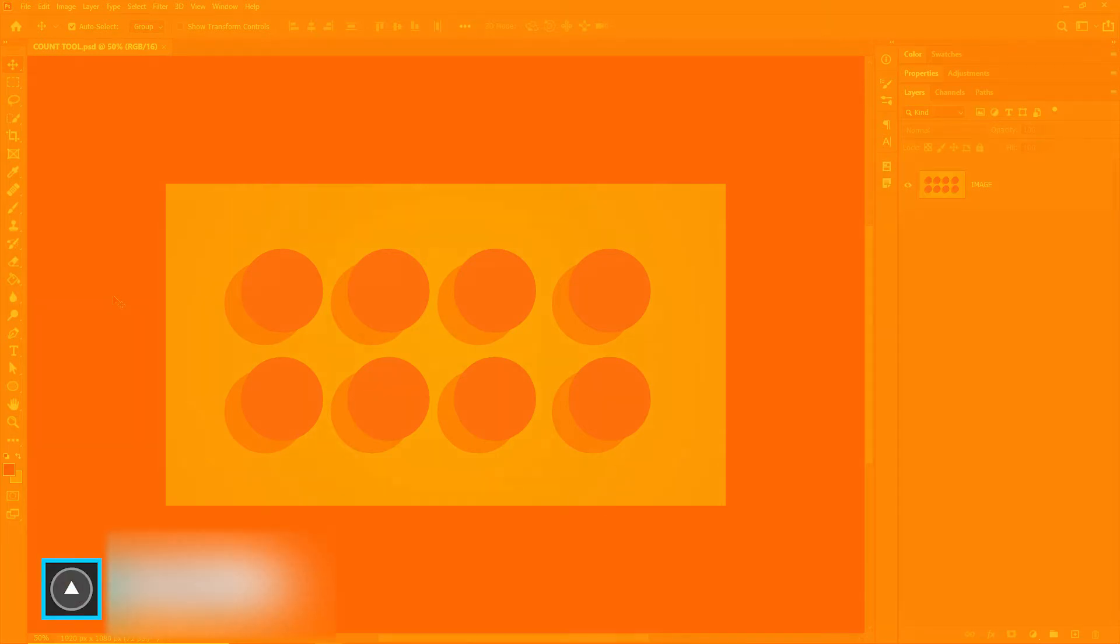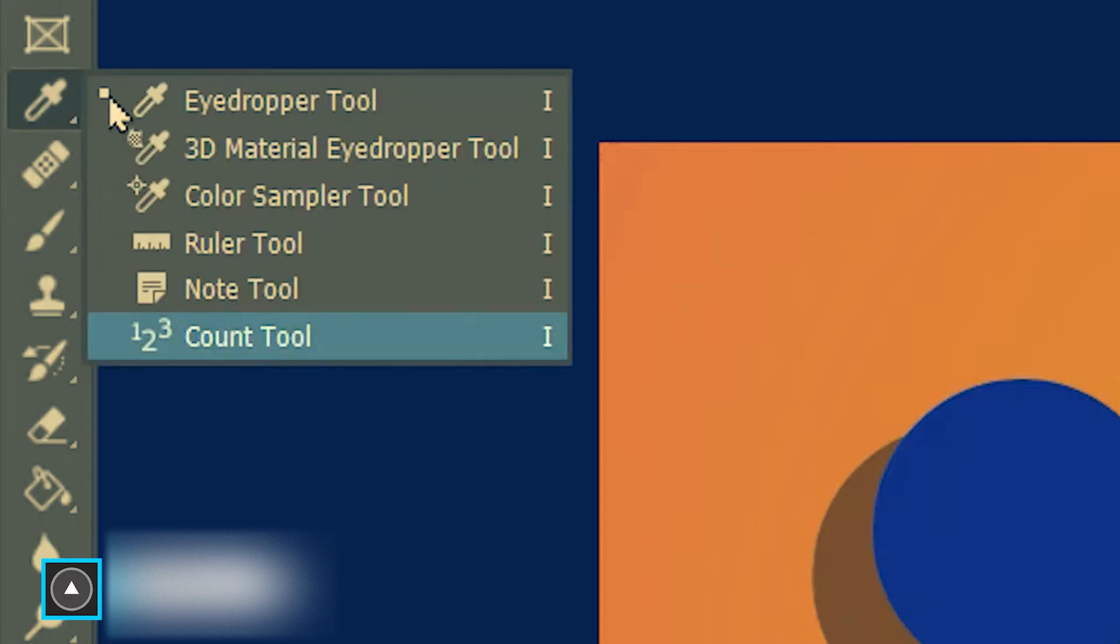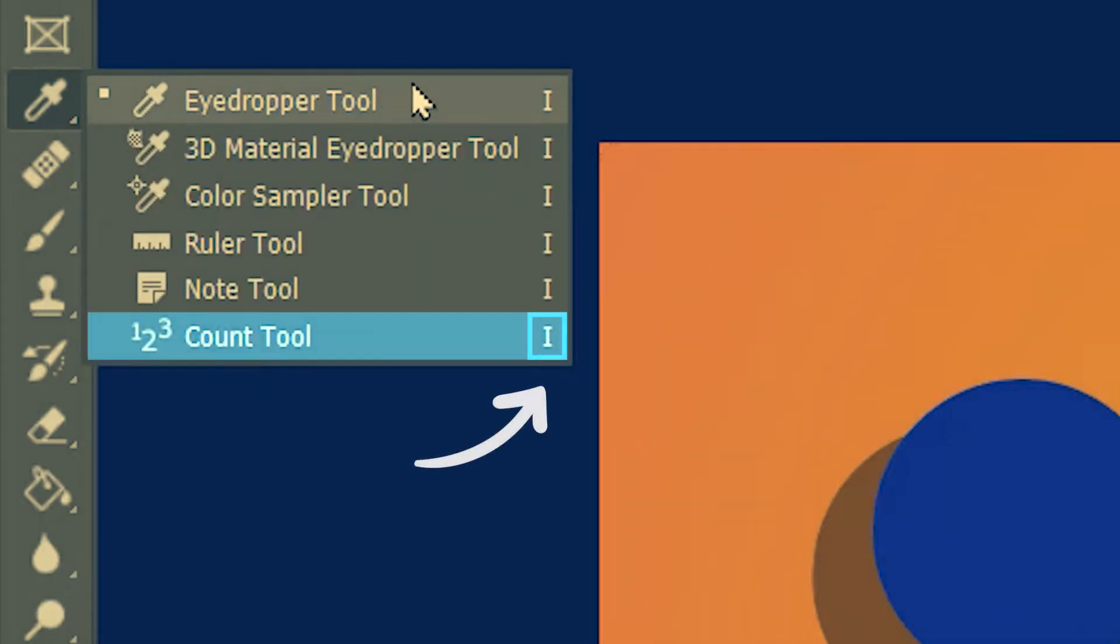Welcome to Artma and today we are learning the count tool in Photoshop. The count tool is located under the eyedropper tool and its shortcut is I.